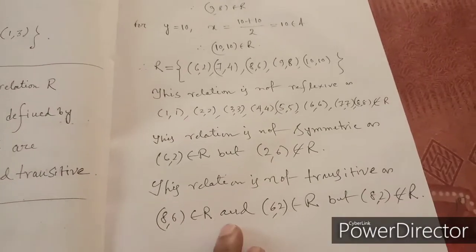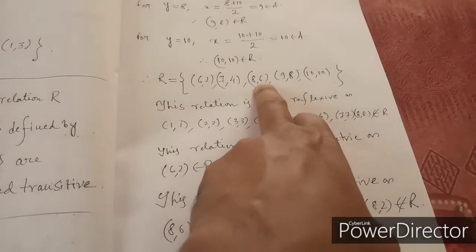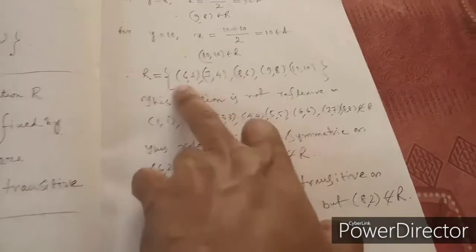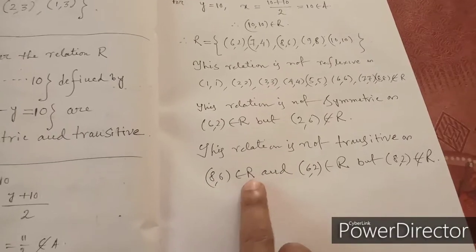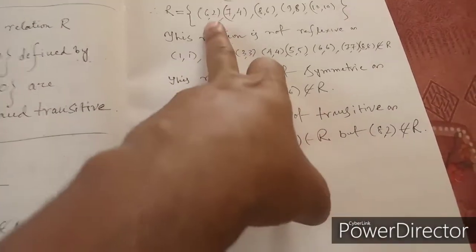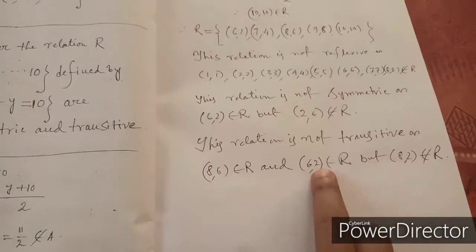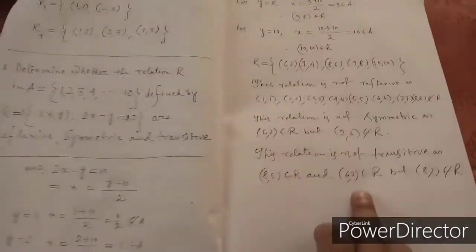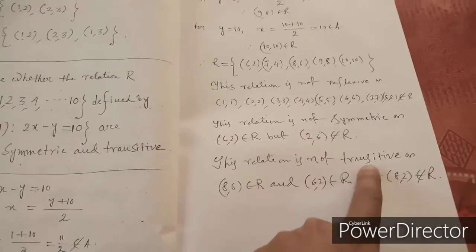For transitivity: (8,6) belongs to R with second element 6, and (6,2) belongs to R with first element 6. Since the 6s are common, (8,2) should belong to R for transitivity. But (8,2) does not belong to R. Therefore, this relation is not transitive. In conclusion, this relation is neither reflexive, nor symmetric, nor transitive.